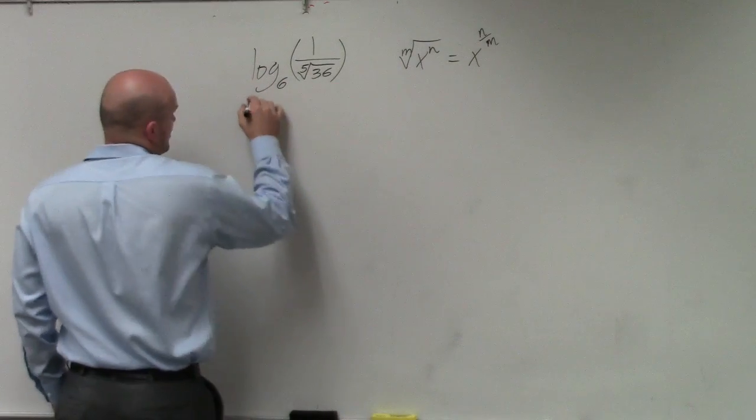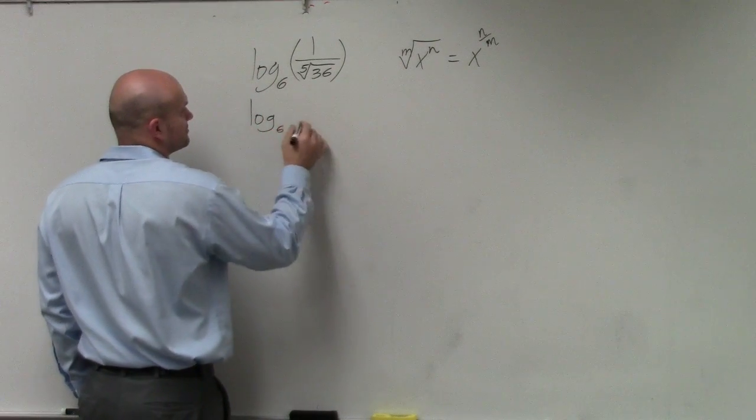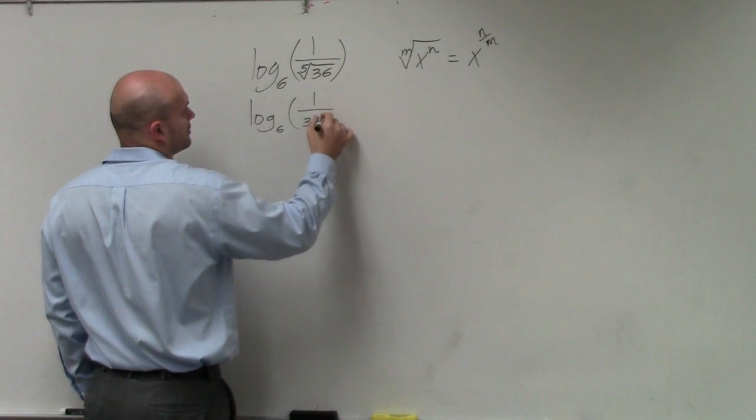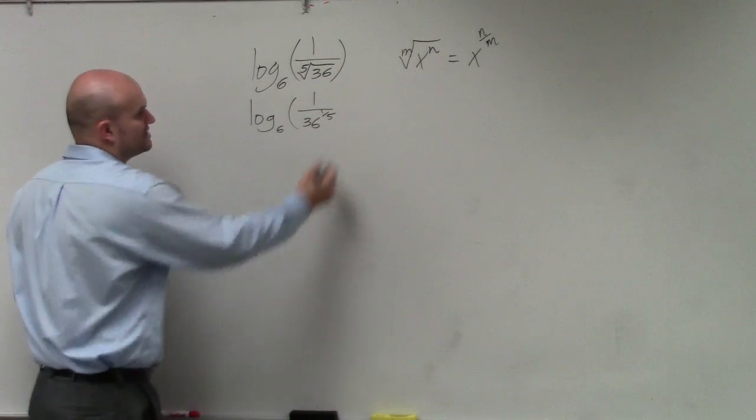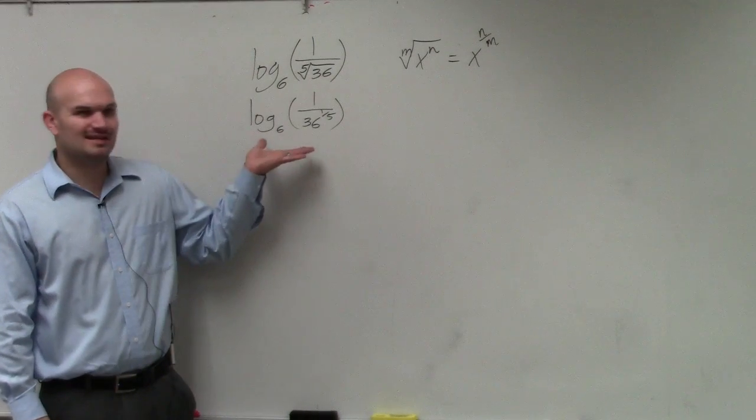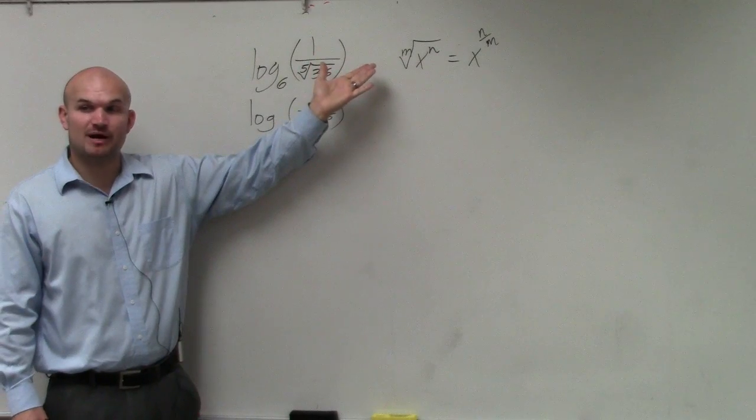Okay, so first thing I can do is rewrite this without a radical. 36 to the 1-fifth power, right? Next thing, we don't like numbers in our denominator. So we don't like radicals, so we rewrite it as rational power.